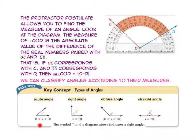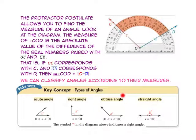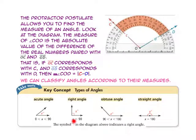We can classify angles according to their measures. An acute angle has a measure between 0 and 90 degrees. A right angle has a measure of exactly 90 degrees. An obtuse angle has a measure between 90 degrees and 180 degrees. A straight angle is exactly 180 degrees. This symbol lets us know that we are talking about a 90-degree or right angle.